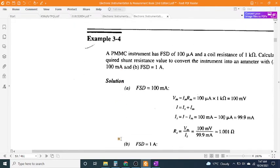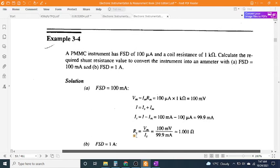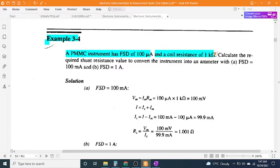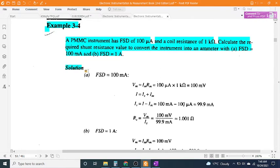Example 3-4: A PMMC instrument has FSD of 100 μA and a coil resistance of 1 kΩ. Calculate the required shunt resistance value to convert the instrument into an ammeter with A) FSD = 100 mA and B) FSD = 1 A.